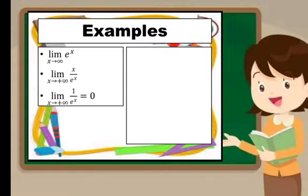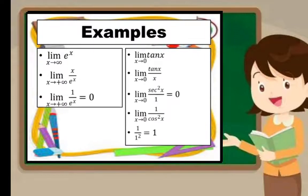And e^x approaches positive infinity, and 1 over e^x equals 0 as the limit of x approaches positive infinity.